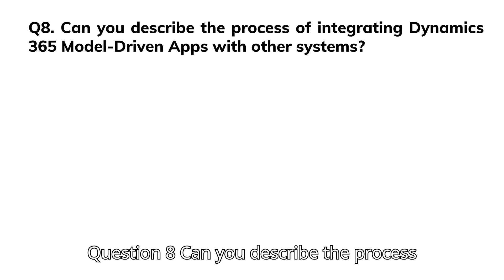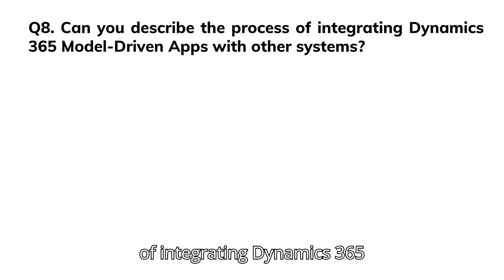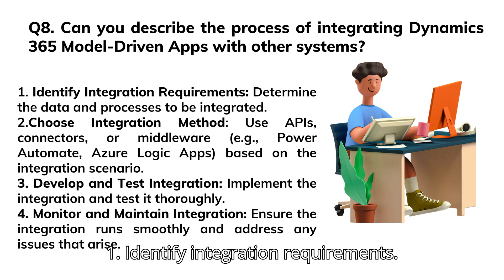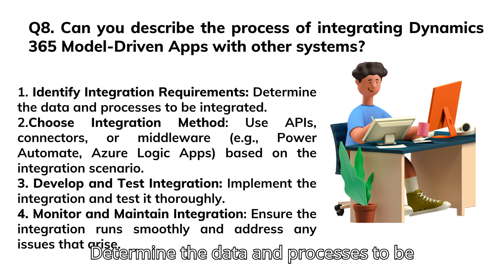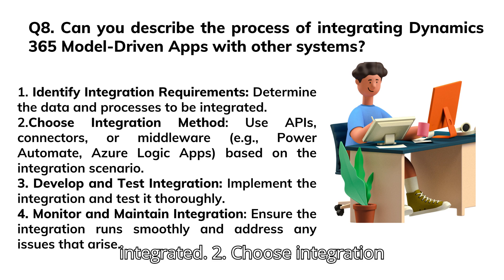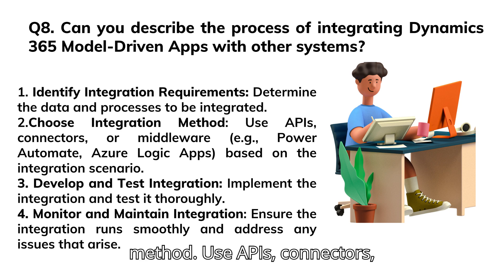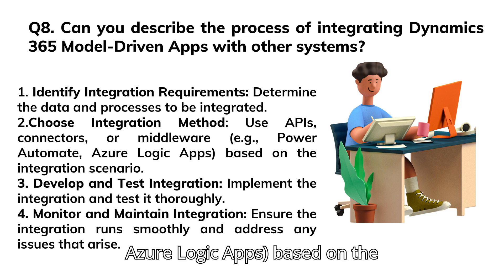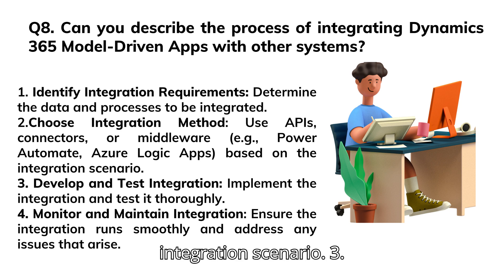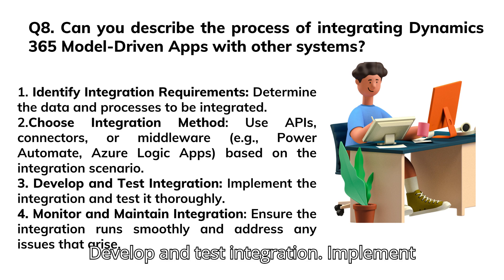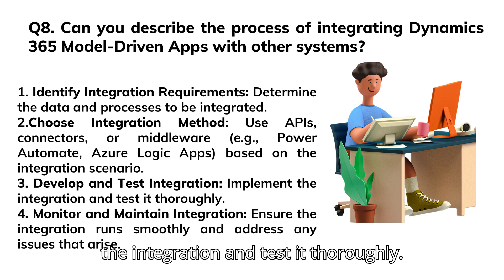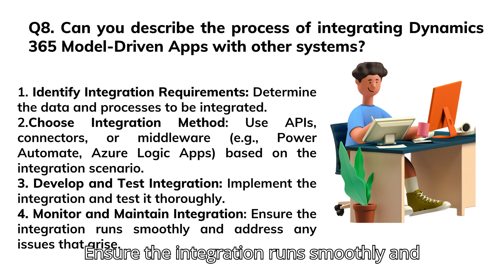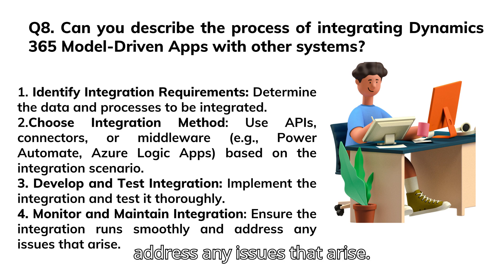Question 8: Can you describe the process of integrating Dynamics 365 model-driven apps with other systems? 1. Identify integration requirements: determine the data and processes to be integrated. 2. Choose integration method: use APIs, connectors, or middleware — e.g., Power Automate, Azure Logic Apps — based on the integration scenario. 3. Develop and test integration: implement the integration and test it thoroughly. 4. Monitor and maintain integration: ensure it runs smoothly and address any issues that arise.